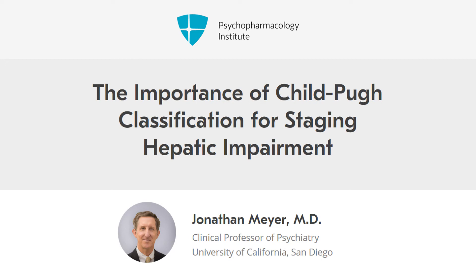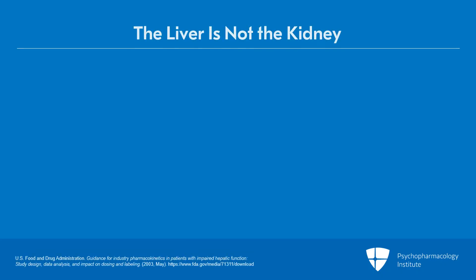How do we end up with Child-Pugh as being the best correlate of the stage of cirrhosis? Importantly, we have more difficulty in trying to figure out what the liver is doing for a particular drug in a way that's not true for the kidney.